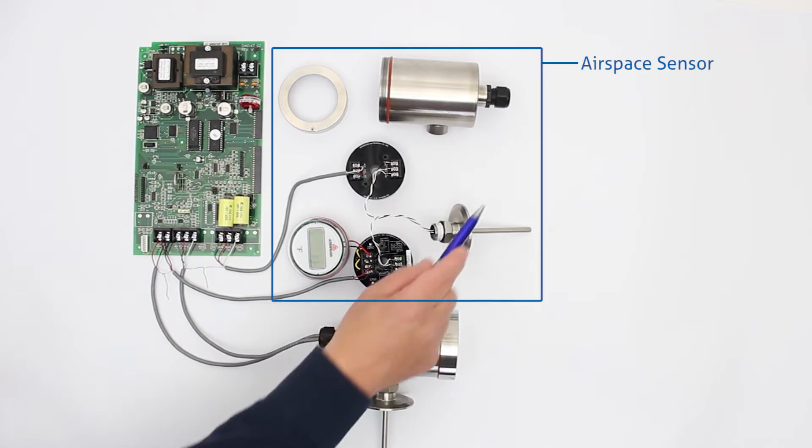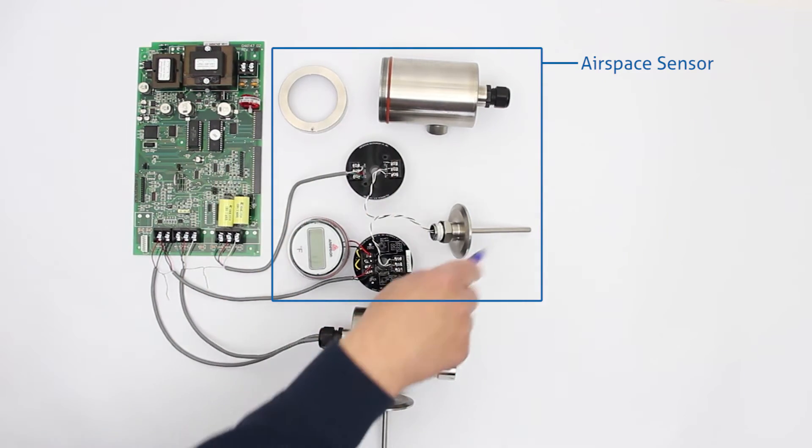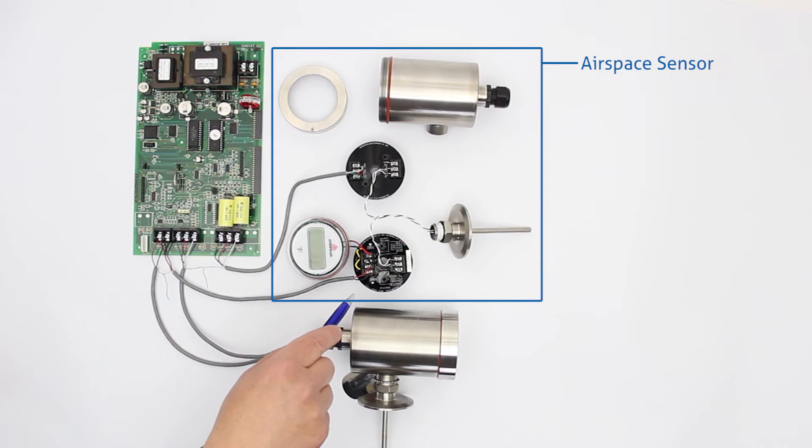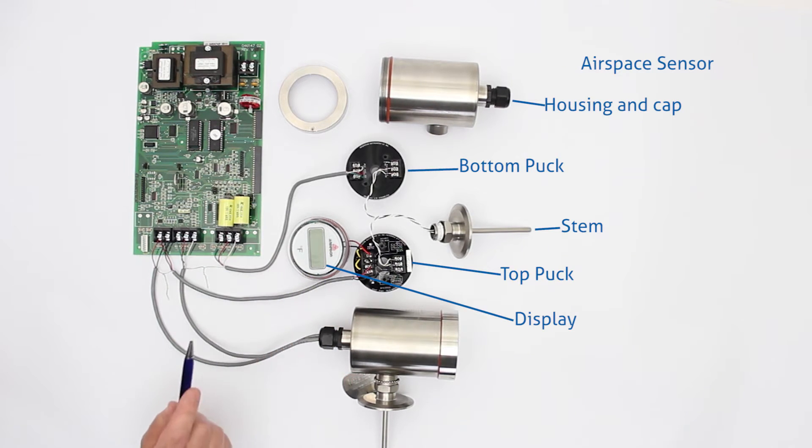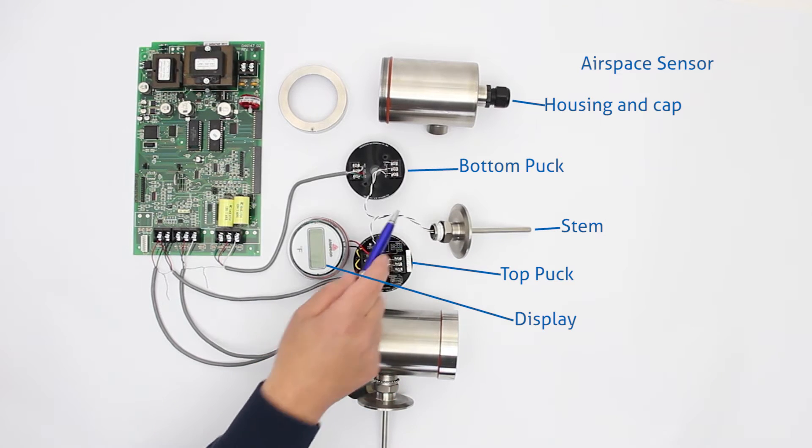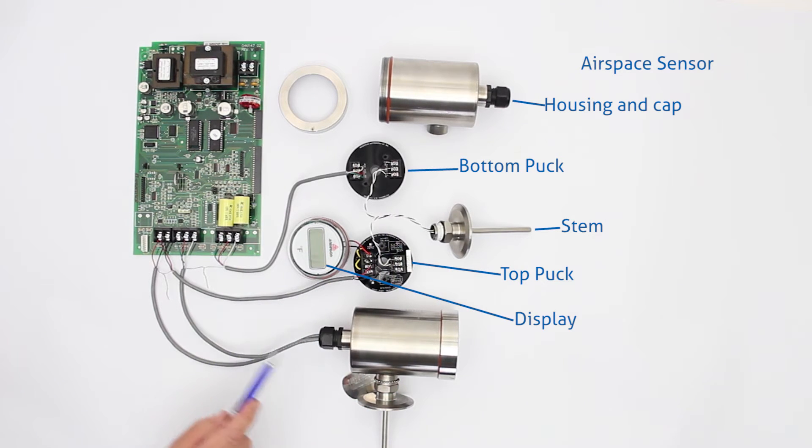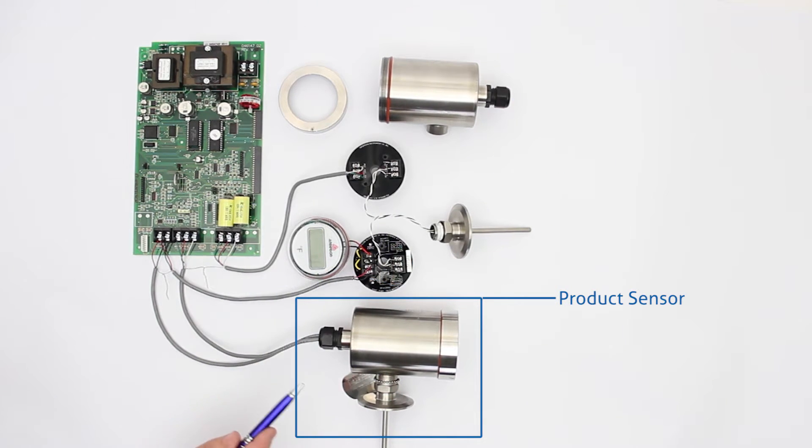We have the airspace sensor completely disassembled so you can see what the internals look like with the bottom puck and the top puck and the display and the back side of the SA stem and then we have our product sensor fully assembled.